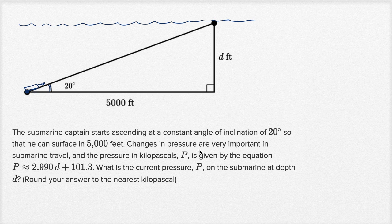Changes in pressure are very important in submarine travel, and the pressure in kilopascals is given by the equation: the pressure in kilopascals is approximately 2.990 times your depth in feet plus 101.3. What is the current pressure P on the submarine at depth d? Round your answer to the nearest kilopascal.